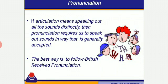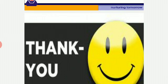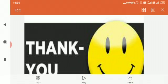Next, we'll talk about pronunciation. When we talk about articulation, it means speaking out all the sounds distinctly. Pronunciation requires us to speak out sounds in a way that is generally accepted. The best way is to follow British received pronunciation. This was all about the second part, and here we complete part 2 of the topic presentation strategies and oral communication. Thank you — you can type your questions in the comment section and subscribe for more videos.